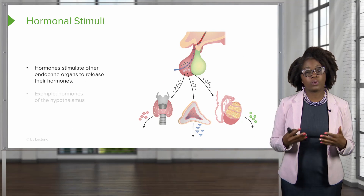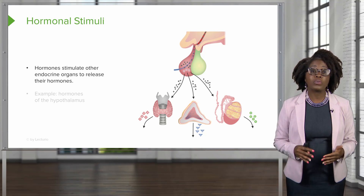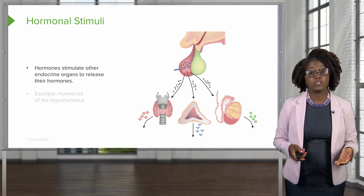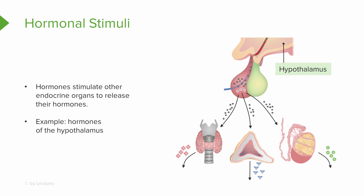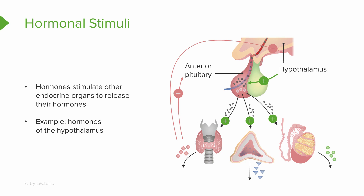Lastly, we have the hormonal stimulus. With a hormonal stimulus, hormones are going to stimulate other endocrine glands to release their hormones. A good example of this are the hormones of the hypothalamus. Hypothalamic hormones stimulate the release of most of our anterior pituitary hormones, and anterior pituitary hormones stimulate targets to secrete more hormones. Activity of the hypothalamic-pituitary-target endocrine organ feedback loop causes hormones from the final target organs to inhibit release of the anterior pituitary hormones. For example, the anterior pituitary releases hormones that trigger the release of testosterone, and consequently, high testosterone levels inhibit the release of those hormones.